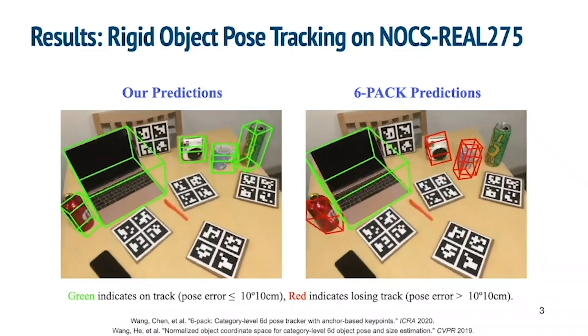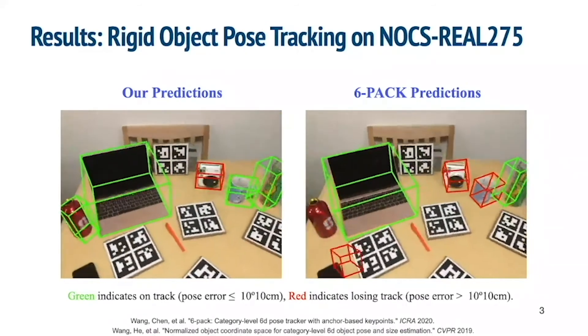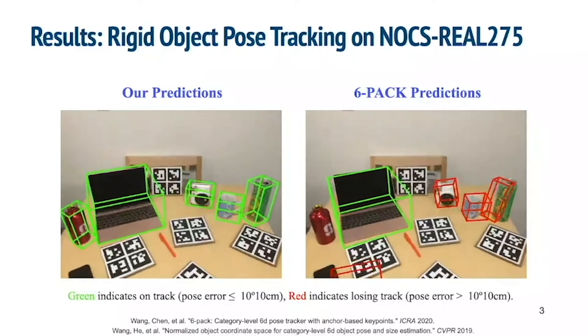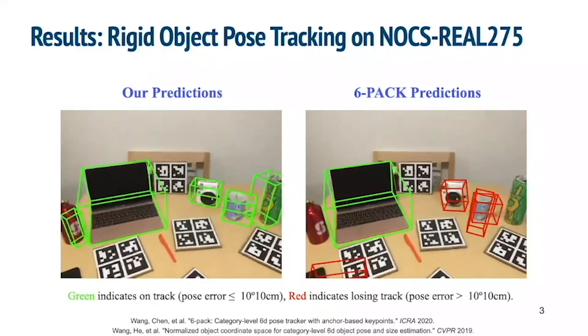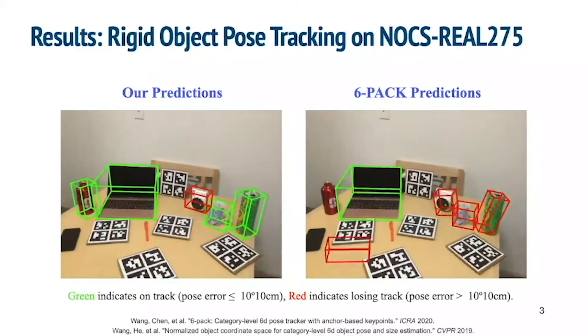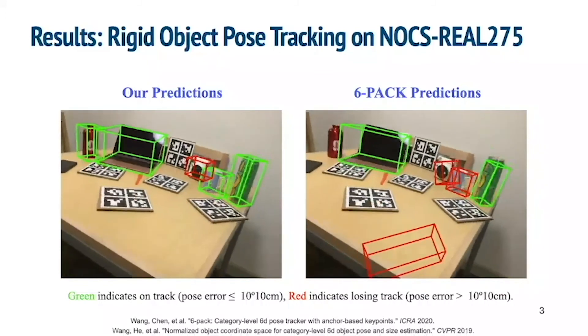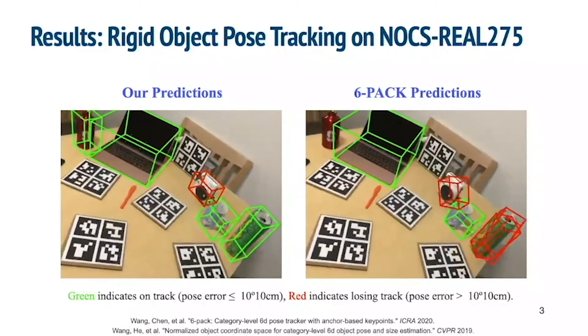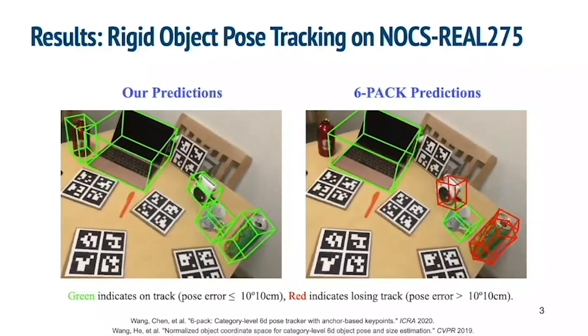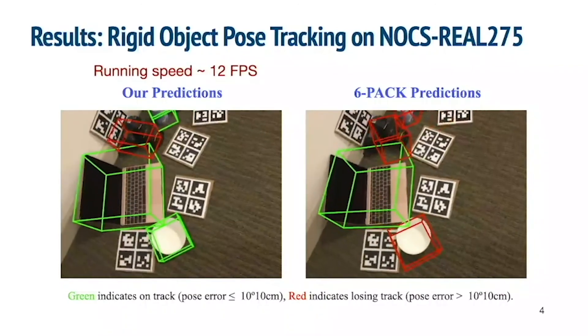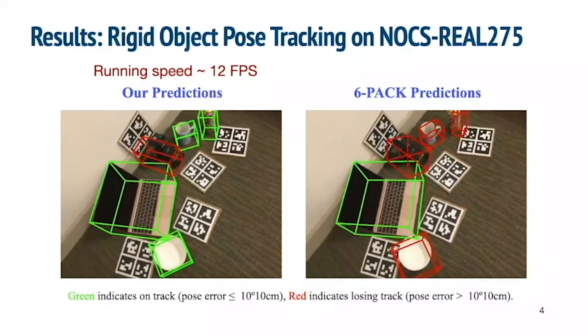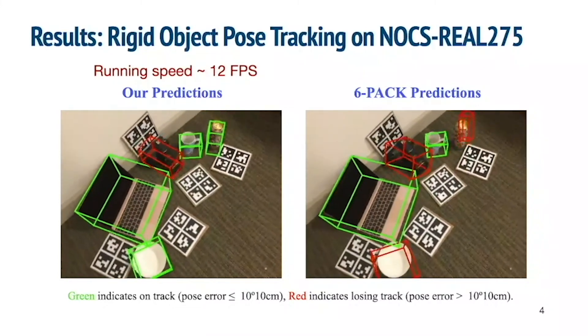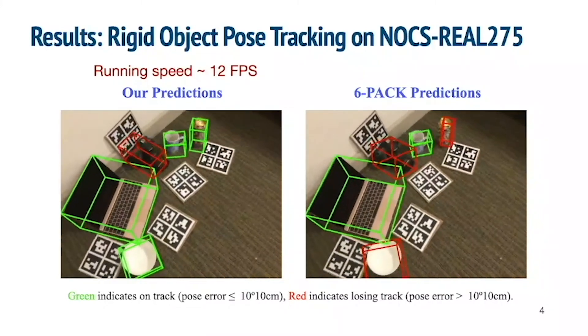Let's start by looking at some qualitative results. Here we show comparison between our method and the state-of-the-art category-level rigid object pose tracking method, 6-pack. Red bounding boxes indicate losing track, and green ones indicate on track. Our method loses track less often and gives more accurate pose predictions. We also achieve a running speed of 12 frames per second, way faster than 6-pack, which runs at 3.5 frames per second.